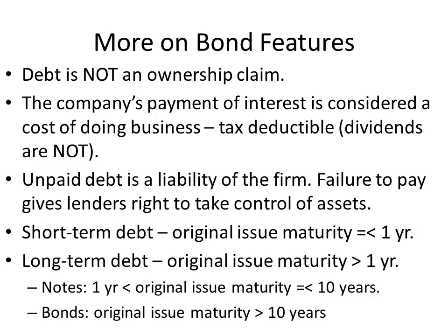We further break down long-term debt into two smaller categories: notes, which have an original issue maturity between one and ten years, and bonds, which have an original issue maturity greater than ten years. Typically 30 years is as long as we see a bond's life, but we may also see 40, 50, 100, or even a perpetual bond issued. The governments of Britain and Canada have previously issued bonds called Consoles, which have no maturity date whatsoever — they just keep going on forever, paying coupons.